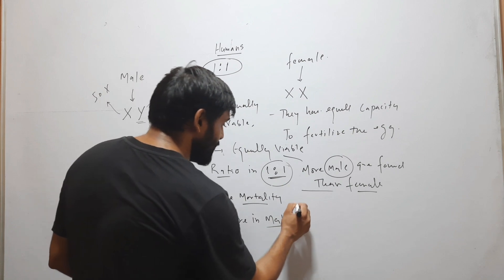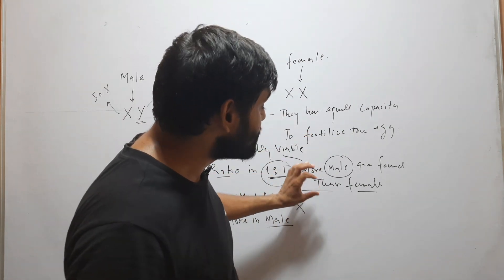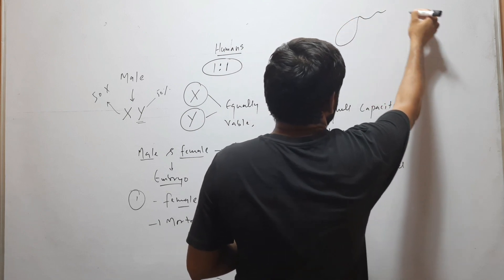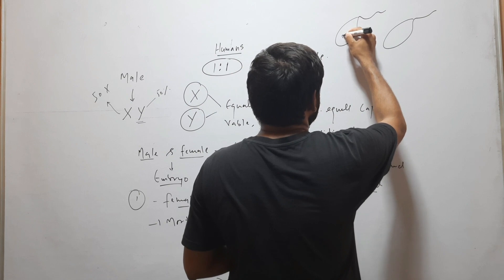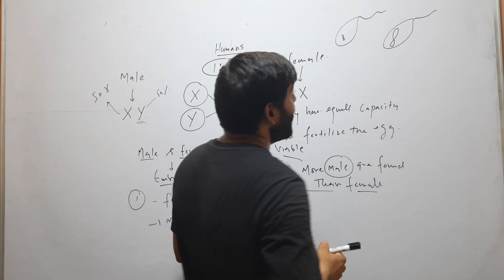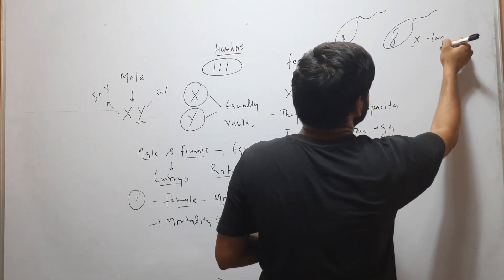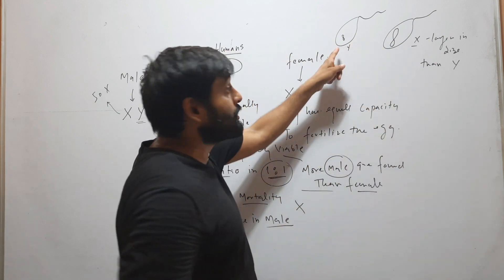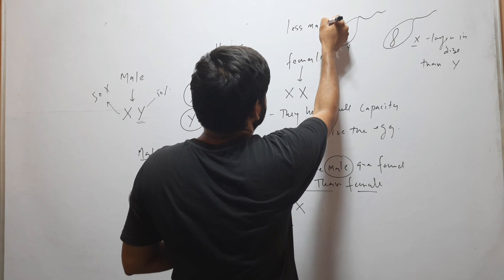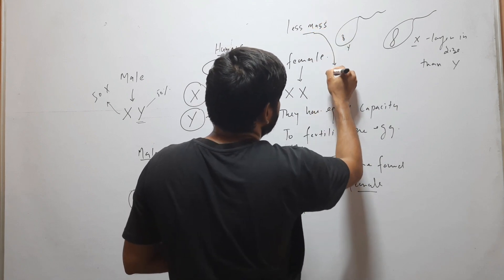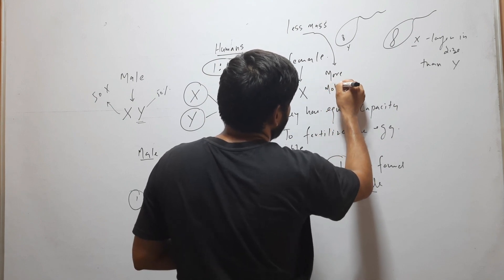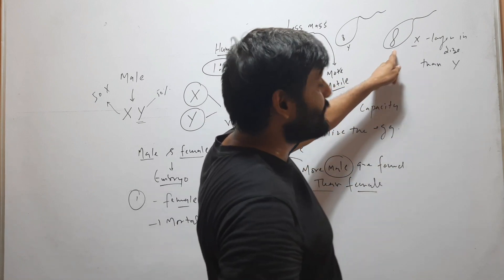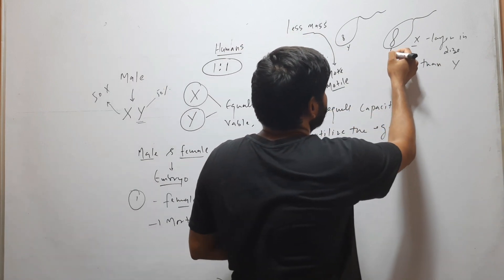The second hypothesis is based on the two types of male gametes: one carries the Y chromosome and one carries the X chromosome. The X chromosome is larger in size than the Y chromosome, so the Y chromosome has less mass. Because it has less mass, the Y-bearing gamete has more mobility — it is more motile.